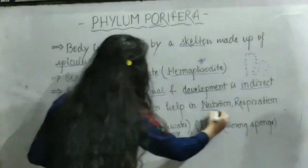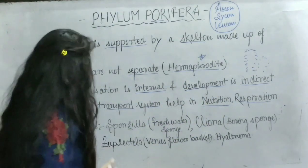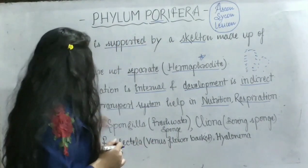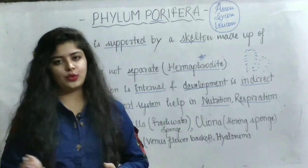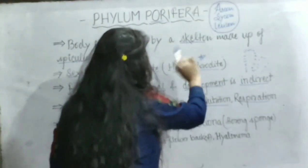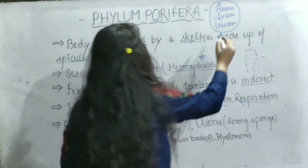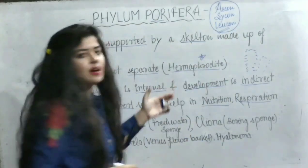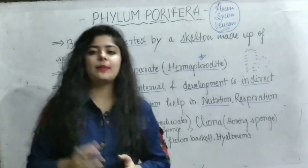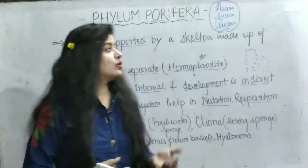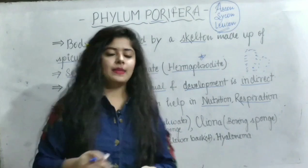Next point: the water transport system helps in nutrition and respiration. In porifera, a water transport system is present which helps in nutrition and respiration. Sponges have three types of water canal systems: ascon type, sycon type, and leucon type. This is a very important point and 100% exam questions are asked on this. The ascon type is the simplest and is found in Leucosolenia. The sycon type is found in Sycon, and the leucon type is found in Spongilla. Rhagon type is seen in the larva of Oscarella.